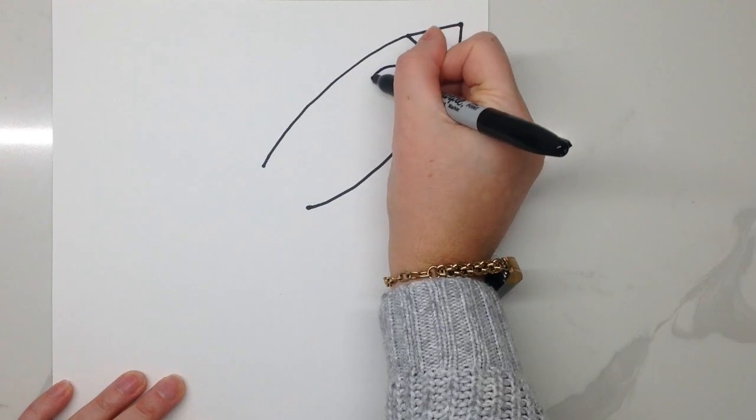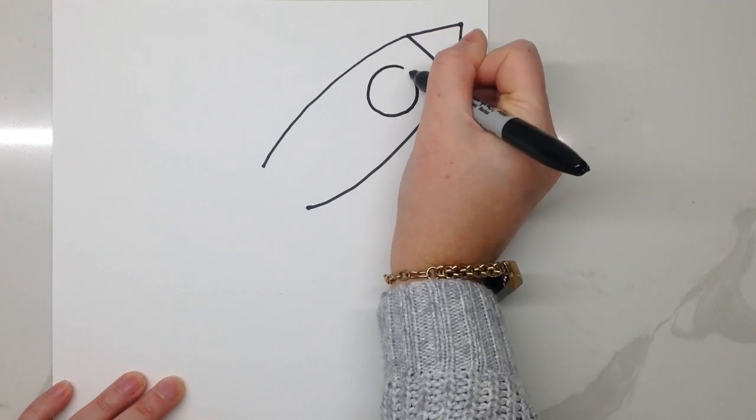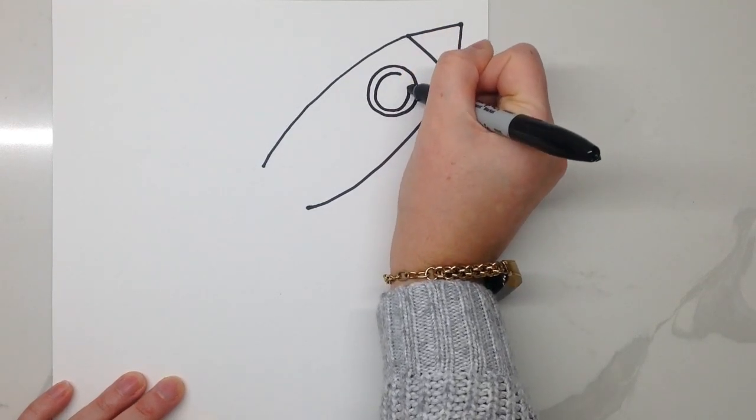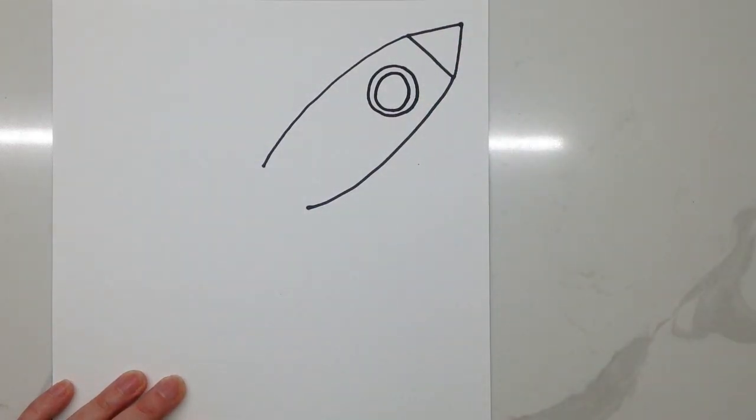Inside of our rocket ship, use two circles, one on the outside and one on the inside, in order to create a window for our rocket ship.